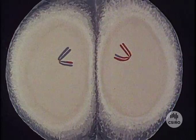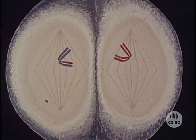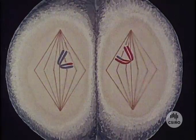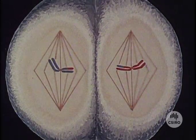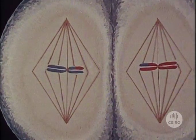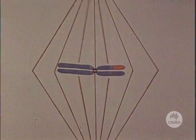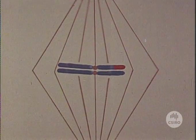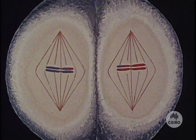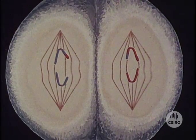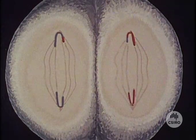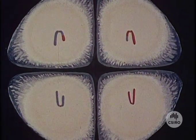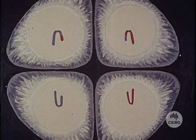The second division of meiosis usually follows soon after the first. A new spindle is formed in each of the daughter cells and the chromosomes become attached to them at their centromeres. After the chromosomes move to the middle of the spindle, the centromeres — which did not divide in the first division — divide. The pairs of chromatids have become new individual chromosomes and these now separate to opposite poles. Walls divide the cells into four daughter cells, each containing half the original number of chromosomes. Nuclear membranes then form around these chromosomes.